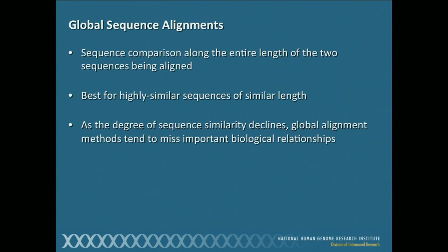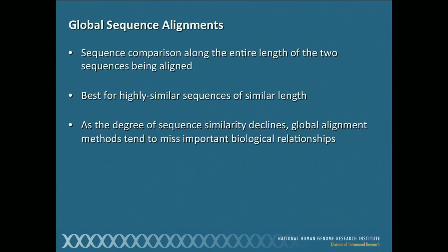Let's talk about the alignments themselves. There are two basic kinds of alignments. The first is called global sequence alignments, where you take two sequences and align them across their entire length — you try to align as many of the amino acid residues or nucleotides as you can across the entire sequences. This works really well when you have highly similar sequences of relatively similar length, but as they become less similar to one another, it is very hard to get a global alignment, and you end up forcing an alignment and missing important structural or functional domains.